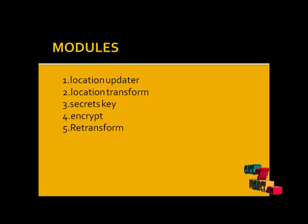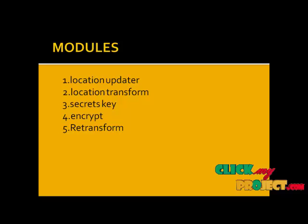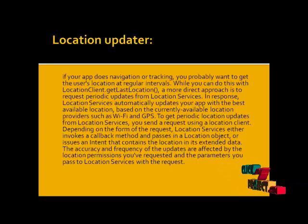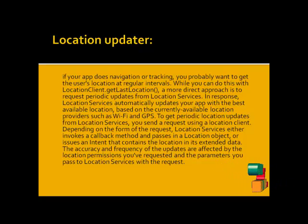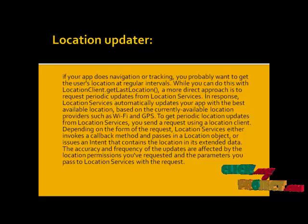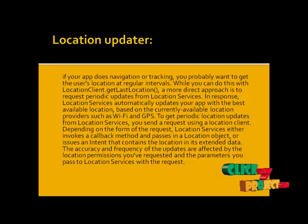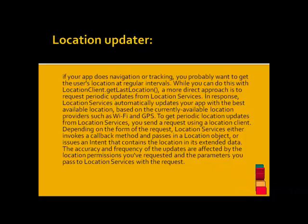Our project contains the following modules: first is Location Update, next is Location Transform, then Secret Key, Encrypt, and finally Edit Transform. For Location Update — if your app does navigation and tracking, you probably want to get the user's location at regular intervals. While we can do this within a location client using 'get last location', a more direct approach is to request periodic updates from the location service. In response, the location service automatically updates your app with the best available location based on currently available providers such as GPS.